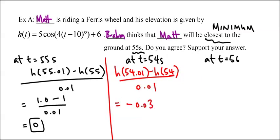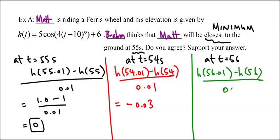And for this one, I'll just use another color again. This is h of 56.01 minus h of 56, and we're just using the same formula over and over again. I know it's a little tedious. And that ends up being 0.02, positive.